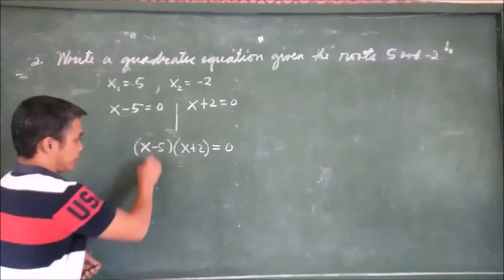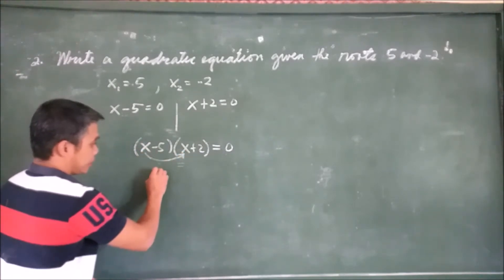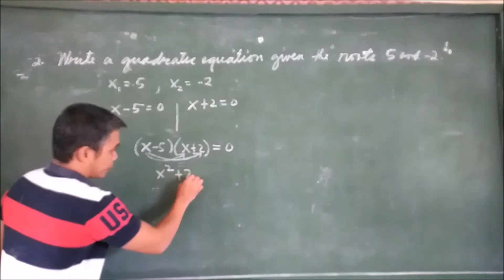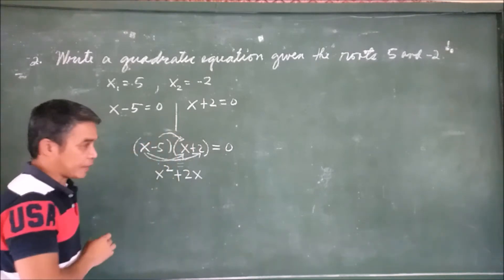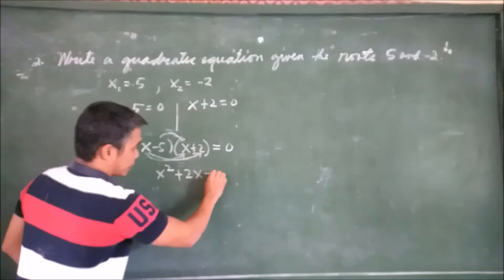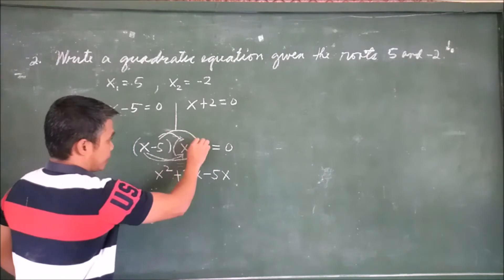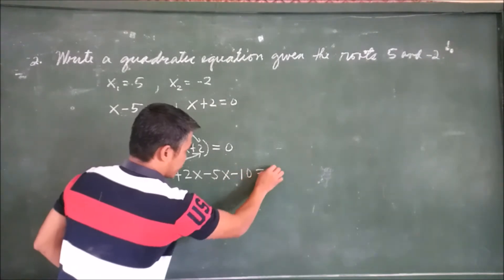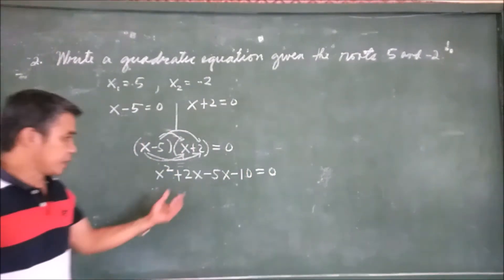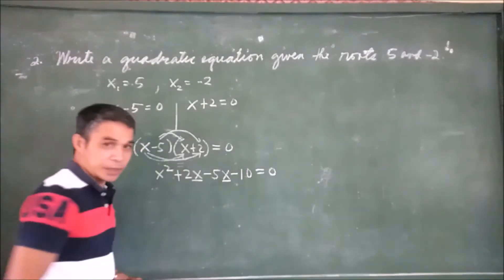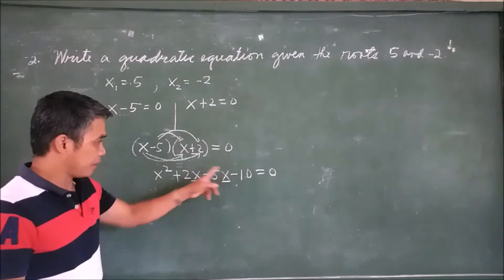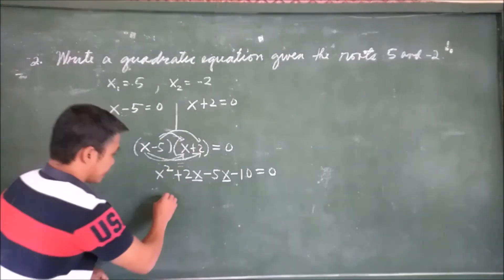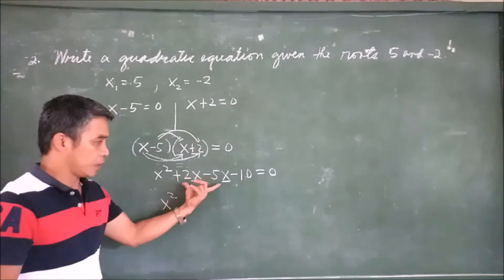Using the FOIL method: x times x equals x²; x times 2 equals positive 2x — wait, negative 2x; negative 5 times x equals negative 5x; negative 5 times 2 equals negative 10. So we have x² − 2x − 5x − 10 = 0. Now combine the like terms — they are like terms because they share the same variable and exponent.